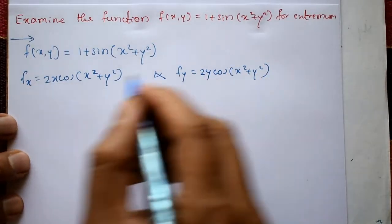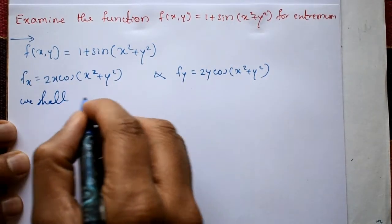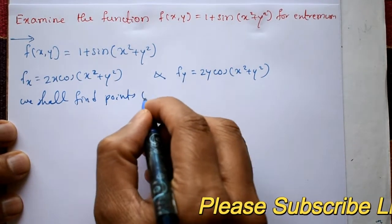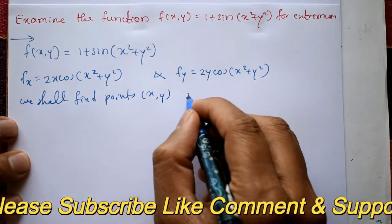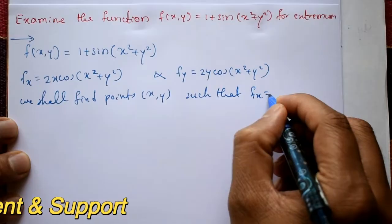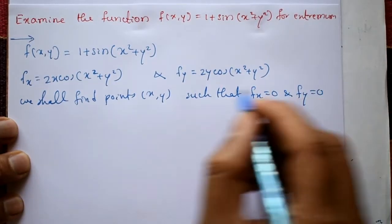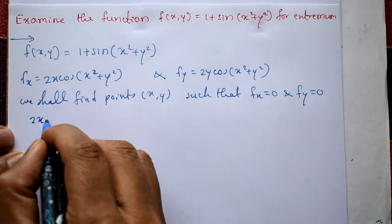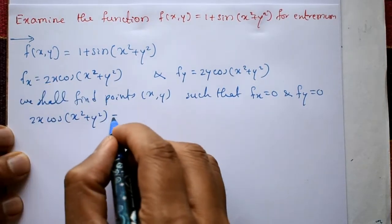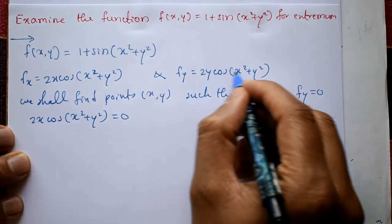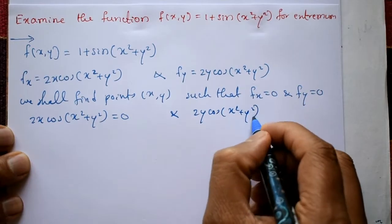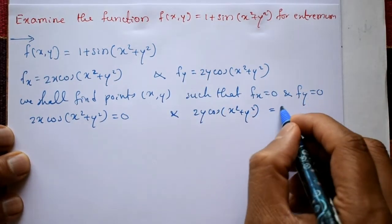Next, find the stationary points — values of x and y such that ∂f/∂x = 0 and ∂f/∂y = 0. The first equation gives 2x · cos(x² + y²) = 0, and the second equation gives 2y · cos(x² + y²) = 0.